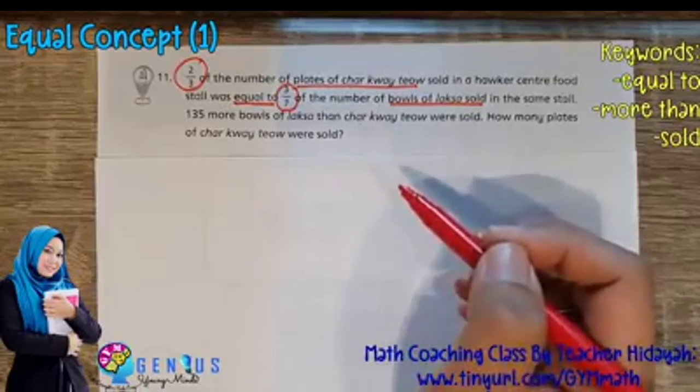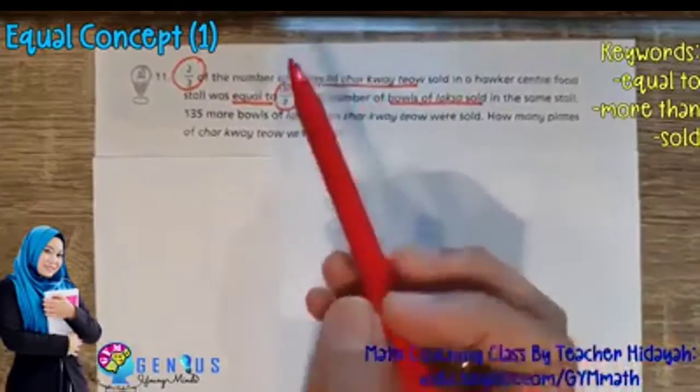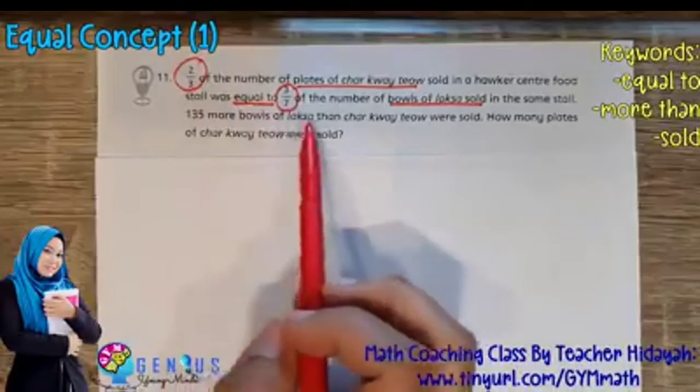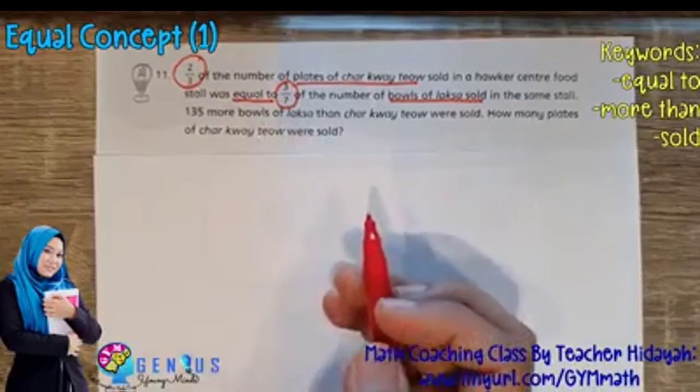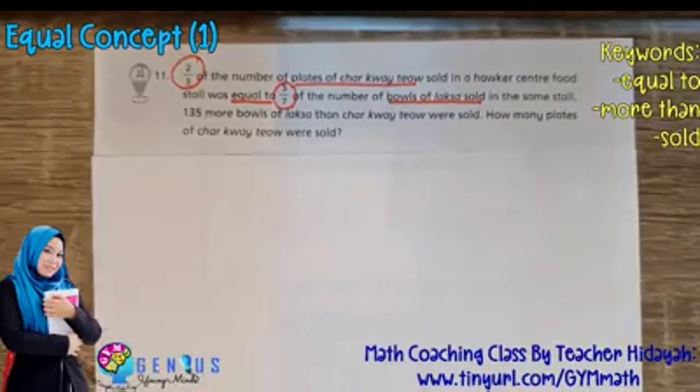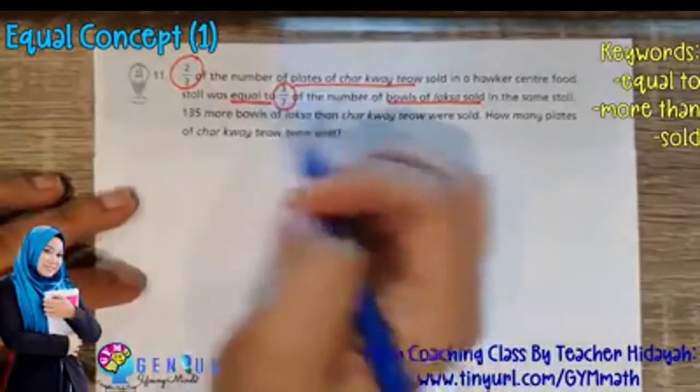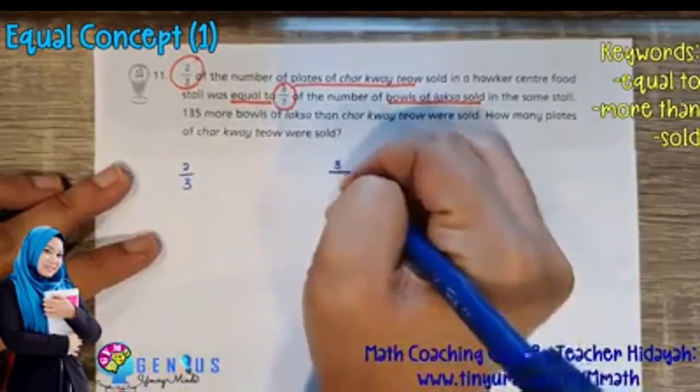So how do we solve equal concept? First of all, your child must be able to identify the fractions in the question, and then convert them into units. In this case, I have 2/3 and 3 over 7. So we are going to rewrite. So we have 2/3 and 3/7.